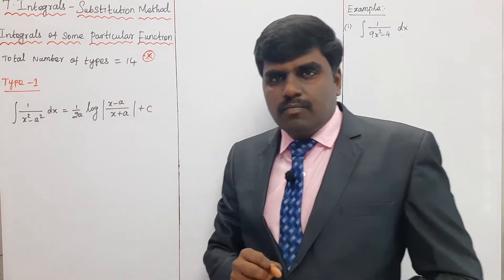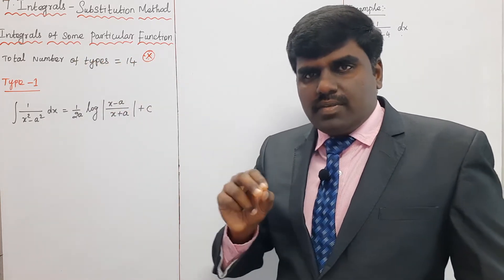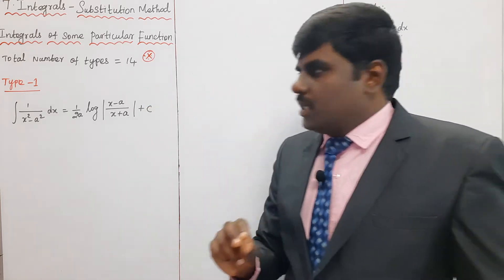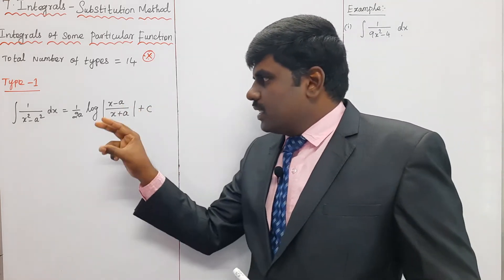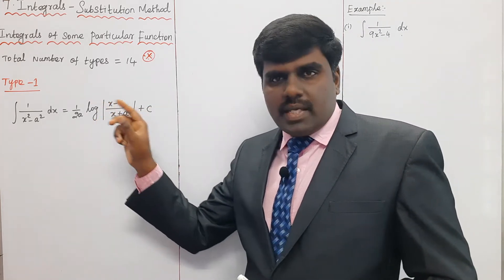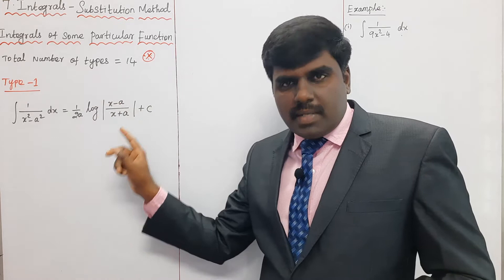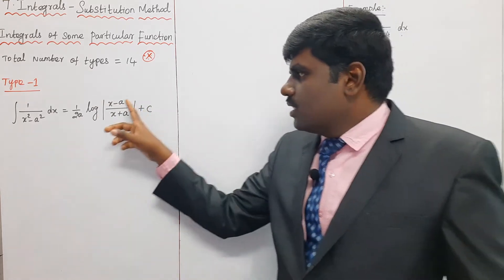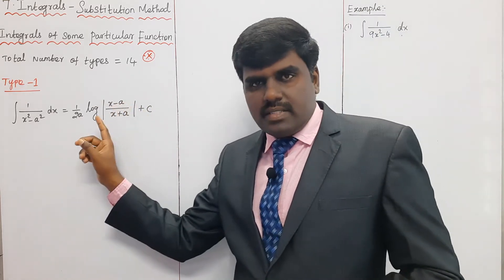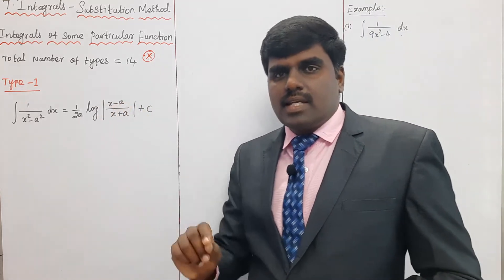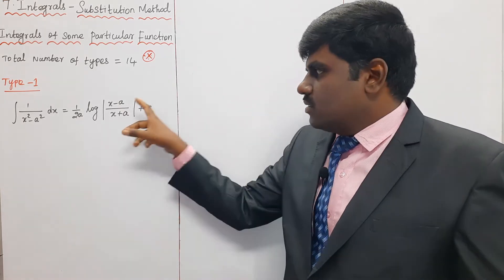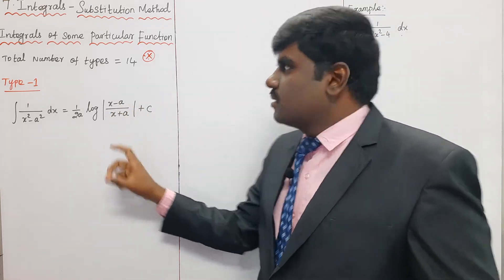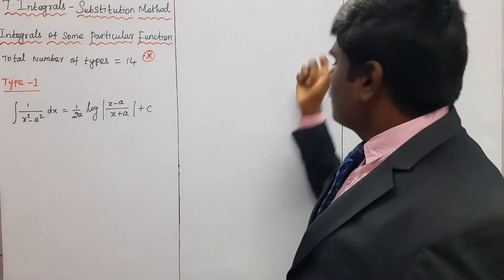Now Type 1: the integration of 1 by (x² - a²) dx is equal to (1/2a) log of (x - a) divided by (x + a), plus constant C. I will prove this concept based on one example.